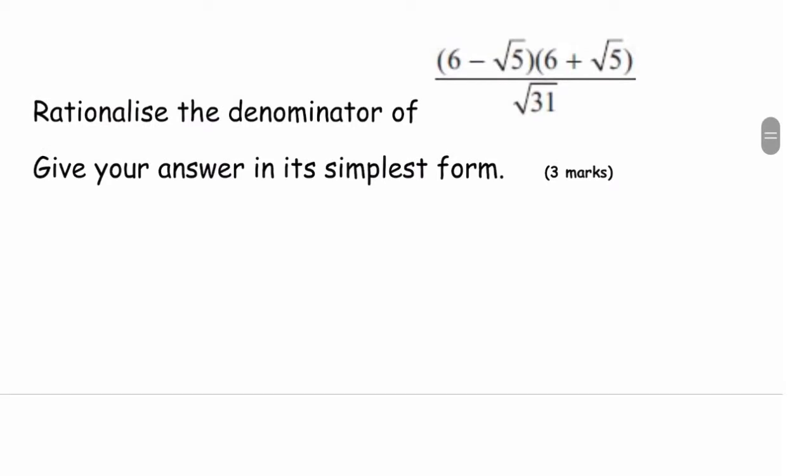The second question: rationalize the denominator of 6 minus root 5 times by 6 plus root 5 over root 31. So first of all, we're going to go ahead and we can expand the brackets. Let's go ahead and expand the brackets.